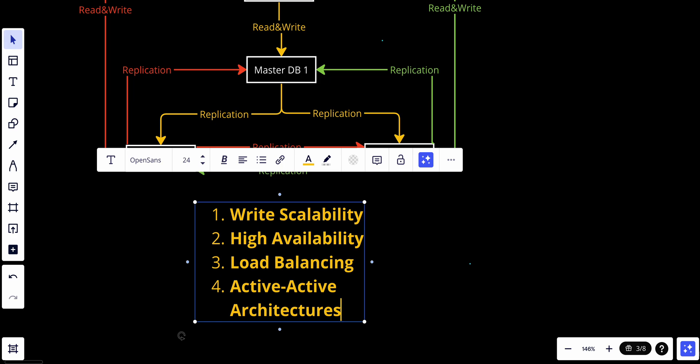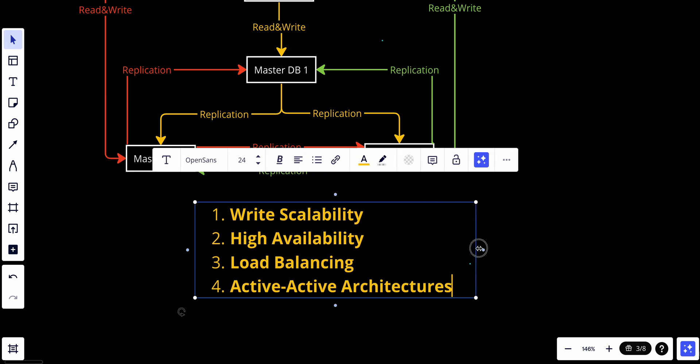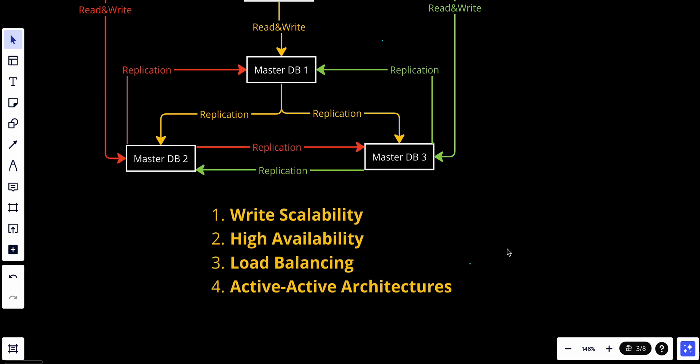We also have active-active architecture. Multi-master databases are well suited for active-active architectures, where different nodes can serve different parts of the application or user base concurrently.